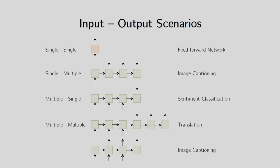These are the input-output scenarios for RNN. The first scenario is single input and single output — that is the feedforward network. The second is single input and multiple outputs, which can be used for image captioning. The third is multiple inputs and single output, applicable for sentiment classification. Finally, multiple inputs and multiple outputs can be used for translation — translation of words — and also for image captioning.